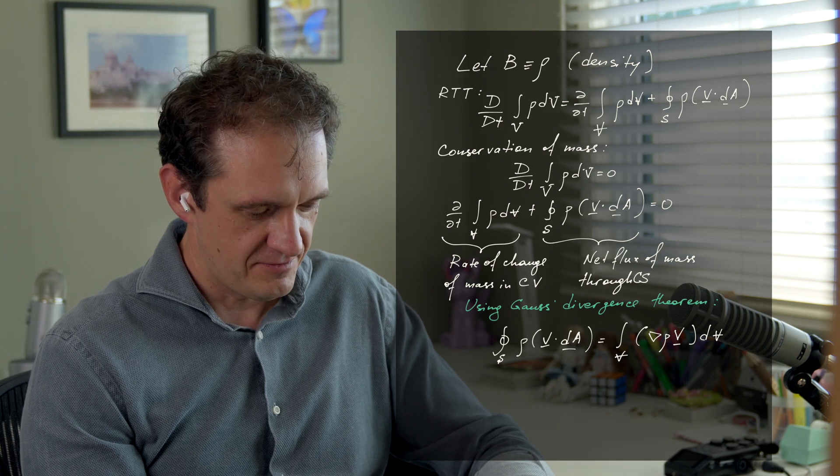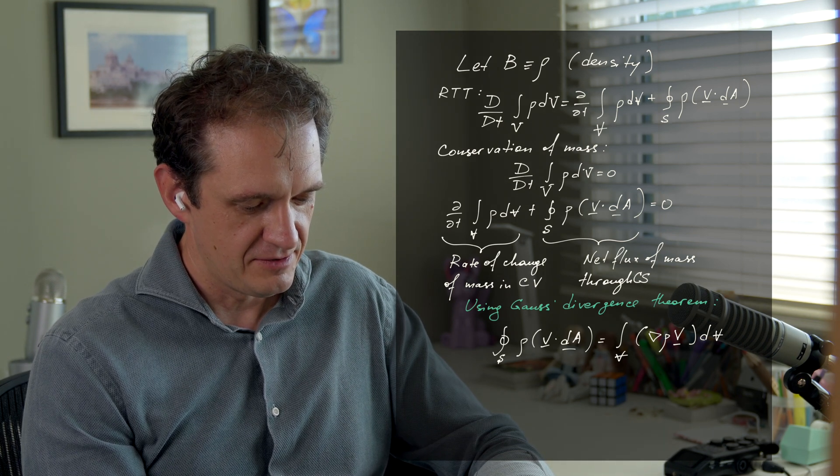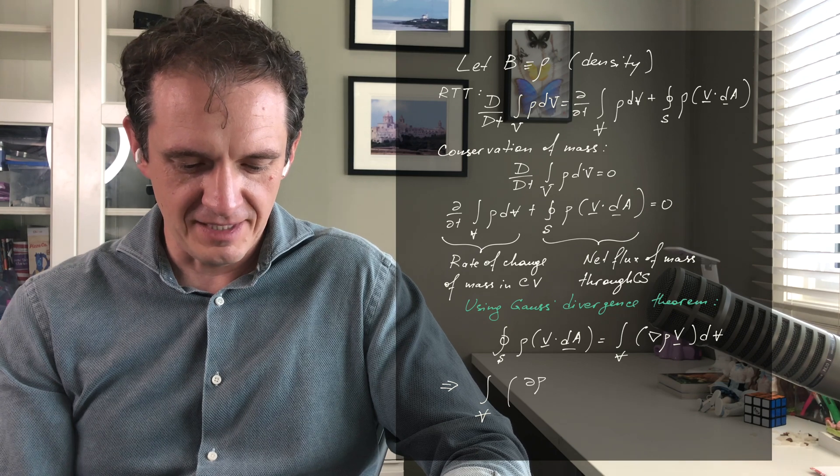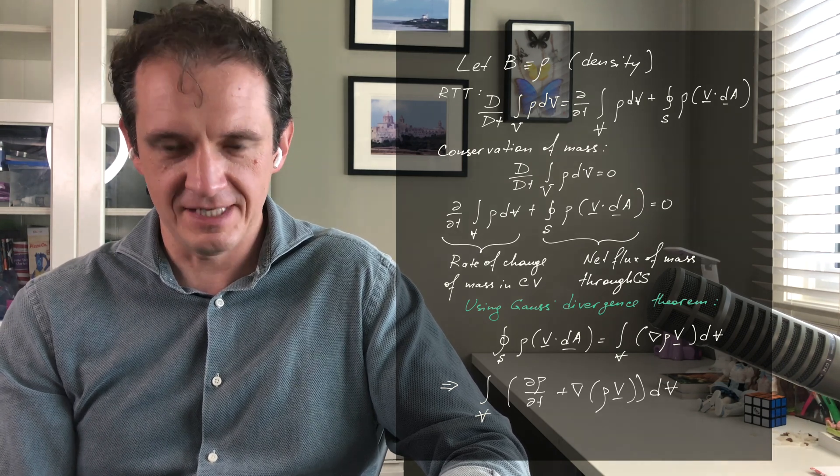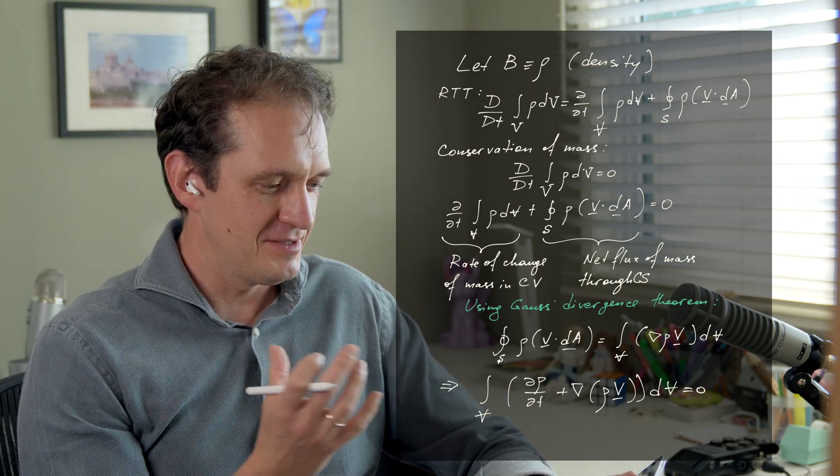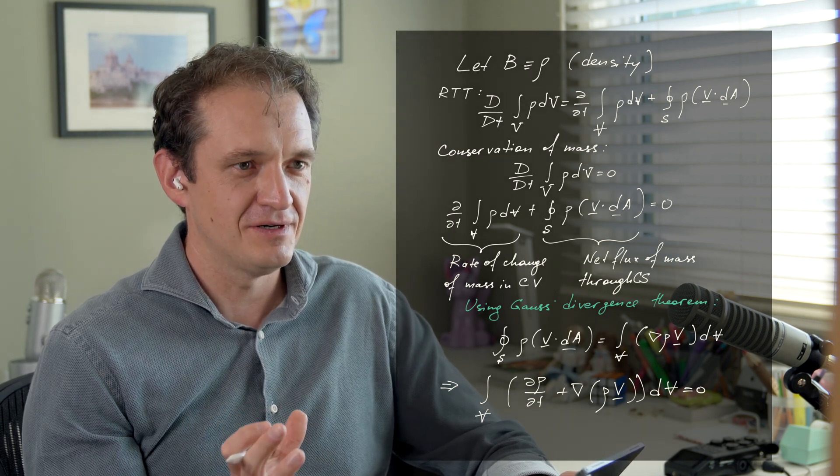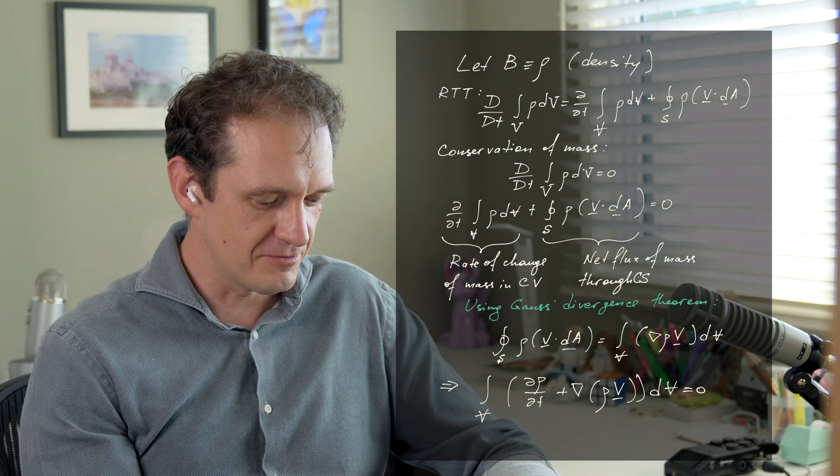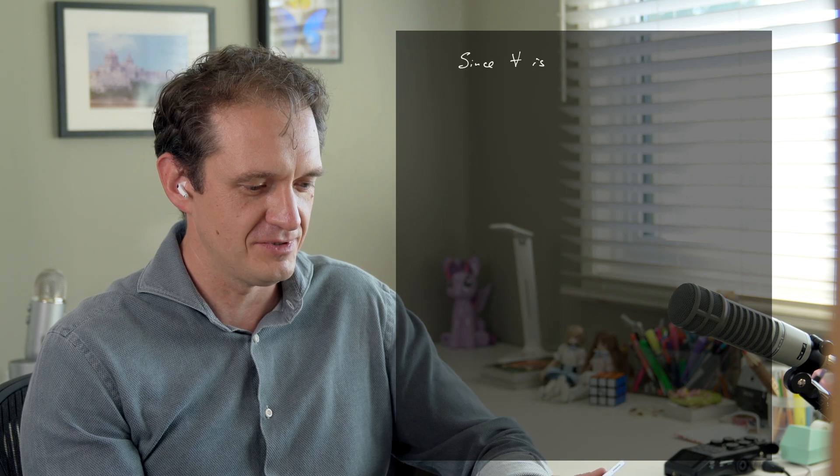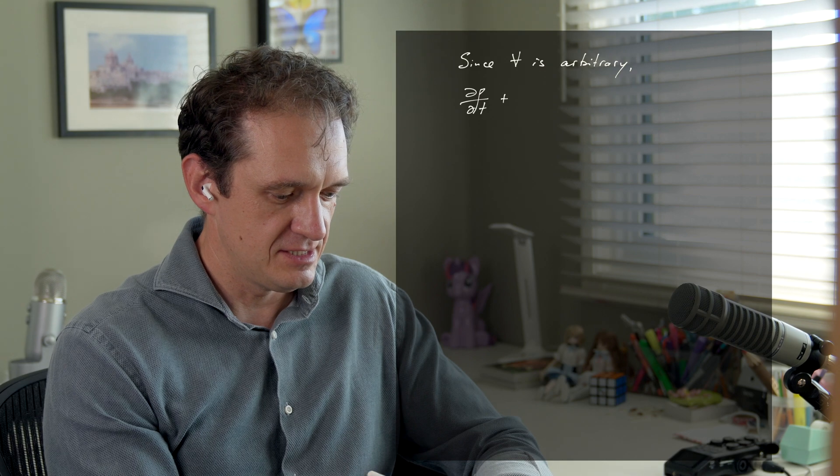So this is the second term in the equation above. We can substitute and combine them under a single integral sign. Now the control volume is arbitrary—we made no assumptions when we started setting it up of what that should be. Therefore, this last expression should hold for any control volume, and that's only possible when the integrand is always zero. And this is the continuity equation.